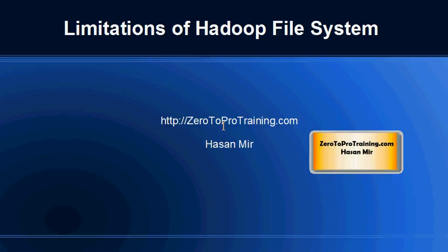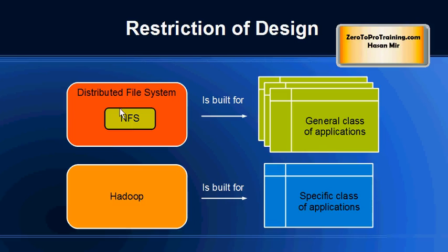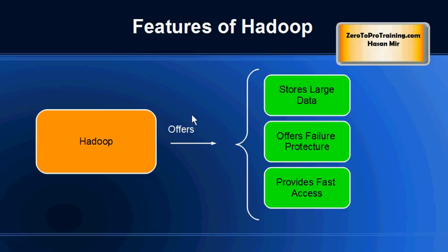Hello, in this session we will talk about limitations of Hadoop file system. This is Hassan Mir from zeroto-pro training.com. In previous sessions we have talked about the characteristics of distributed file system and we noticed that network file system is one of the oldest and most commonly used distributed file systems. It is designed to serve general purpose applications, however in case of Hadoop only specific kinds of applications can make use of this technology.